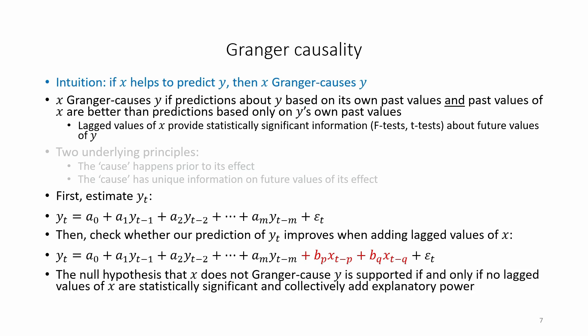The null hypothesis that x does not Granger cause y is supported if and only if no lagged values of x are statistically significant and collectively add explanatory power.